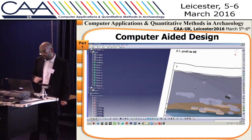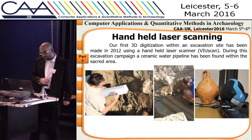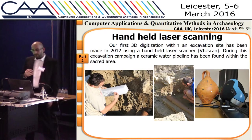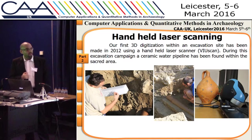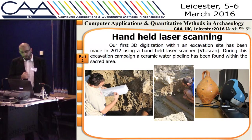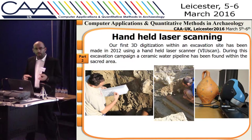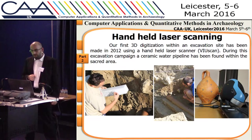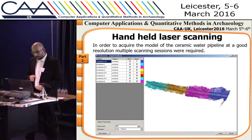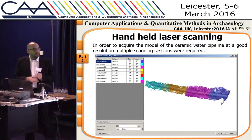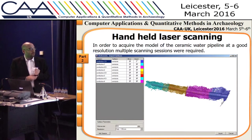CATIA V5 can also be used with great success in this kind of application. Later we managed to acquire a 3D laser scanner — this is the first scanner we acquired that can capture both geometry and texture. We used this scanner to digitize a water pipe that was found in the 2012 excavation campaign.